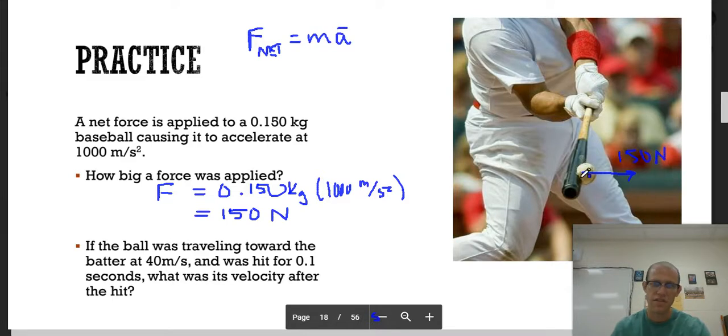You can even see the deformation of the ball right there that we talked about in a previous video. Whenever there is a force, there's always a deformation. If the ball was traveling toward the batter at 40 meters per second and was hit for 0.1 seconds, what was its velocity after the hit?